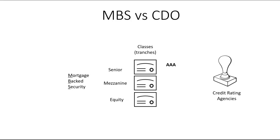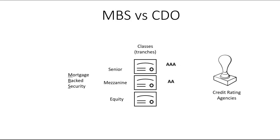After the mezzanine tranche is made whole, the third class — the equity tranche — gets paid. By ordering investors by priority, credit rating agencies like Standard & Poor's, Moody's, and Fitch could rate them accordingly. The senior tranche, safest because it's paid first, gets a triple-A rating. The mezzanine tranche gets a double-A. The equity tranche, the riskiest, gets the lowest rating — say a B. The equity tranche promises the highest return, around 10%, the mezzanine maybe 6%, and the senior tranche the lowest return.